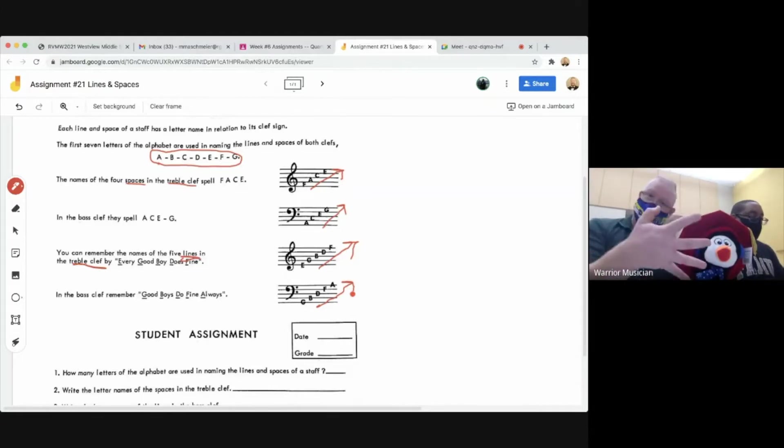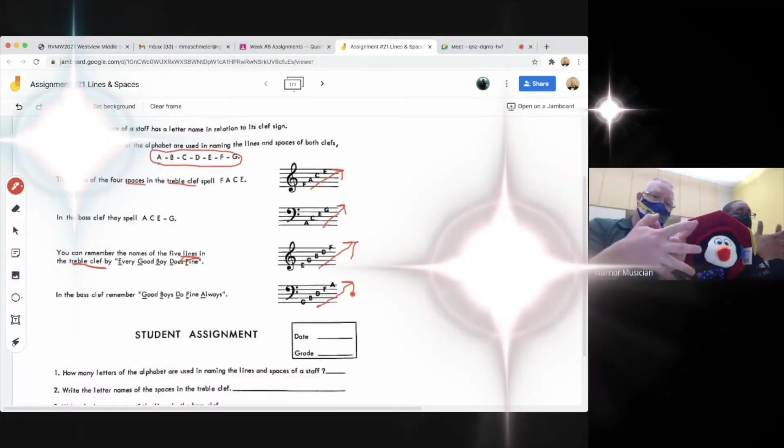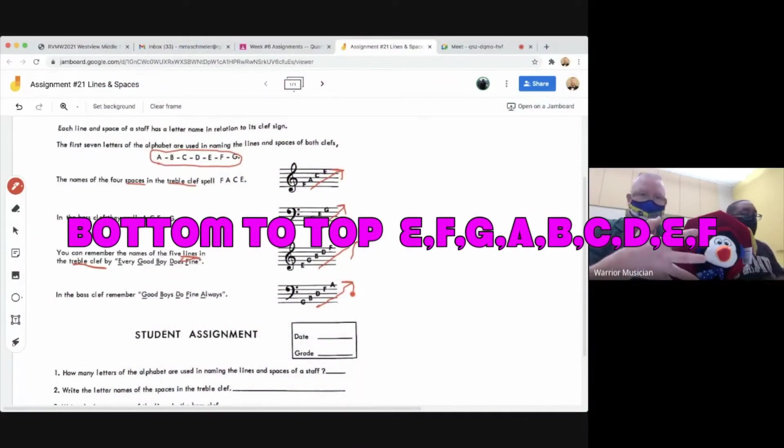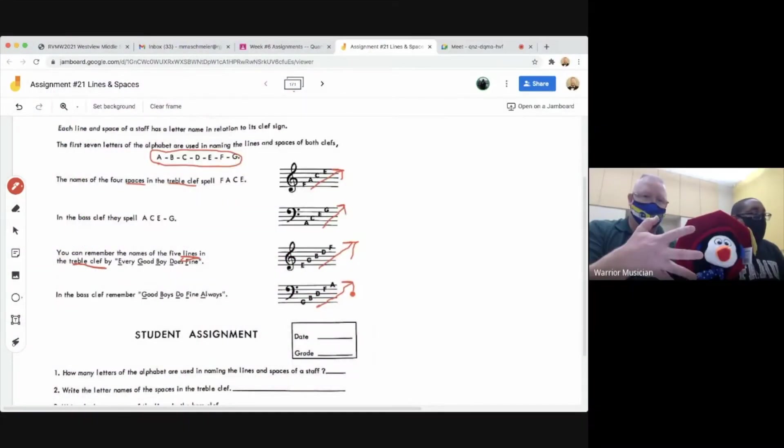That is what question six is asking from bottom to top in order. You can use your hand just like I am. E, F, G, back to A. A, B, C, D, E, F. There's your lines and spaces together.